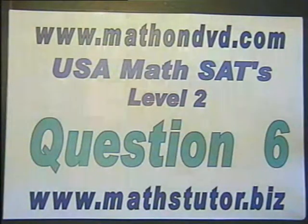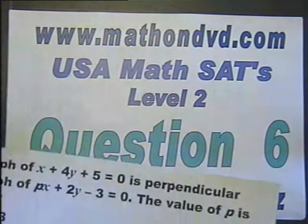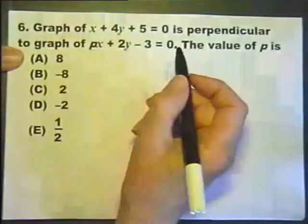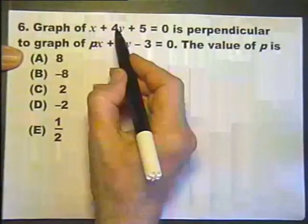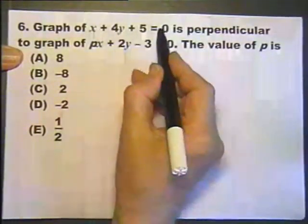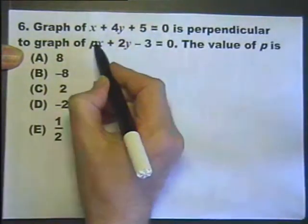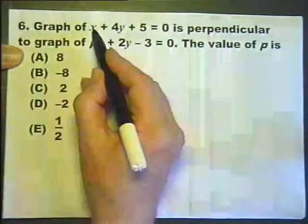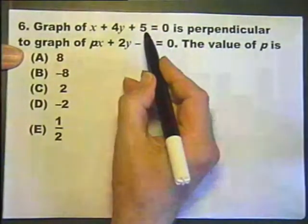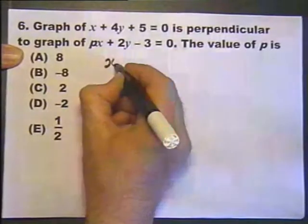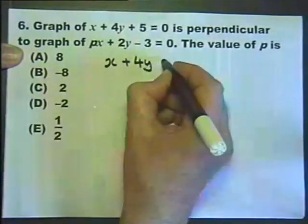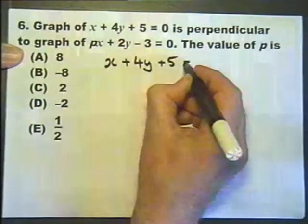Math SAT Level 2, Question 6. We're told that this graph is perpendicular to this graph — in other words, at right angles. Let's just look at this graph for a moment and make Y the subject.